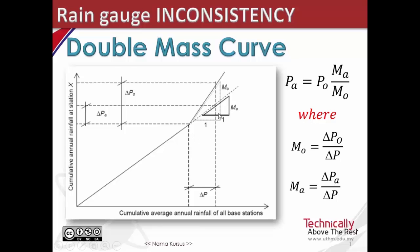Any break point in the curve suggests a possible change at the test station in relation to the base station. If a change in slope is evident, then the record needs to be adjusted with either the early or later period of record adjusted.